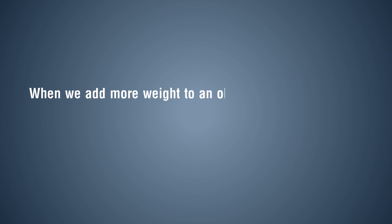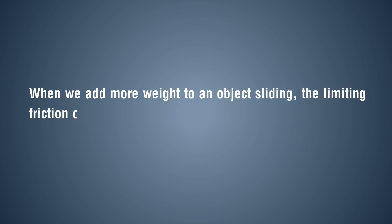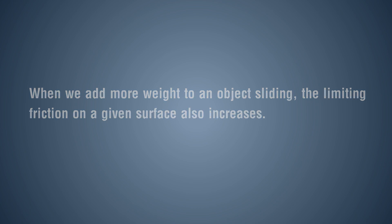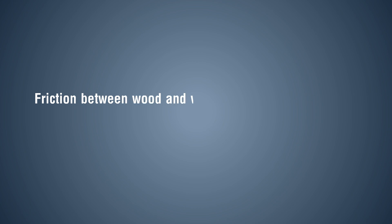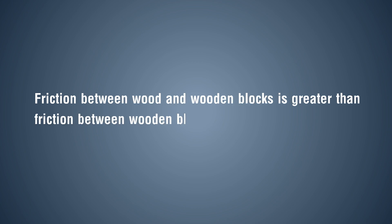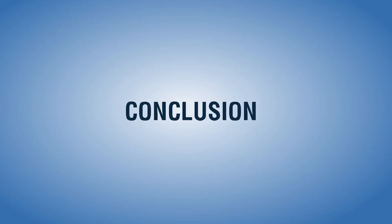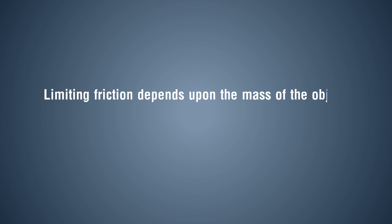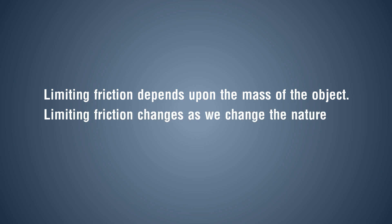When we add more weight to an object sliding, the limiting friction on a given surface also increases. Friction between wood and wooden blocks is greater than friction between wooden blocks and glass plates. Conclusion: Limiting friction depends upon the mass of the object, and limiting friction changes as we change the nature of surfaces in contact.